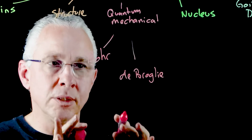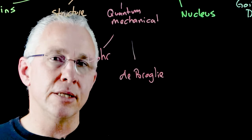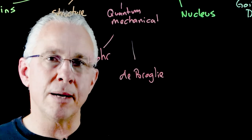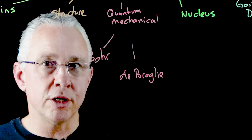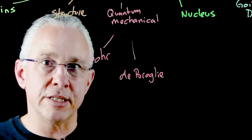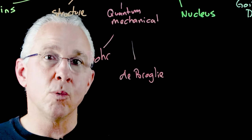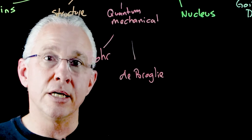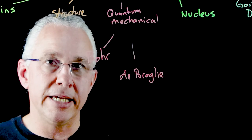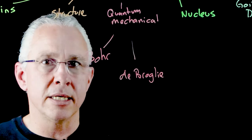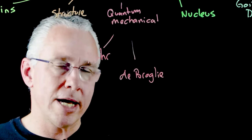This model was developed in the mid-1920s, but within a couple of years the work of Davidson and Goomer showed in fact evidence to support this particular model, where electrons were shown to not only diffract but also have interference patterns. And that means it's acting like a wave.